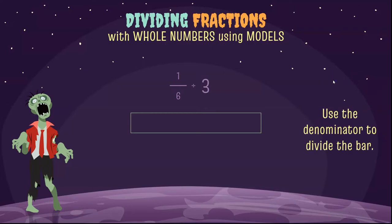The next thing we're going to do is we're going to use the denominator to divide the bar. So our denominator is six, so we are going to divide this into sixths.